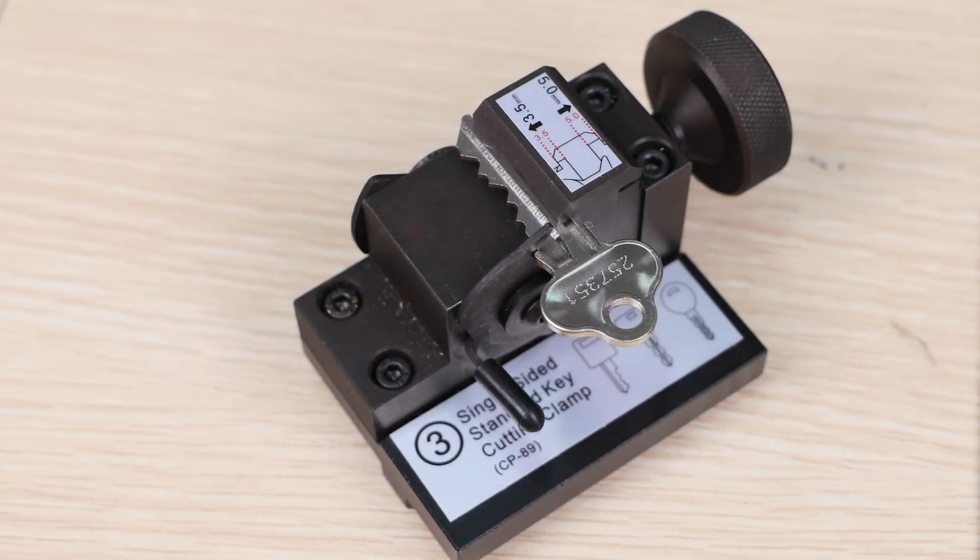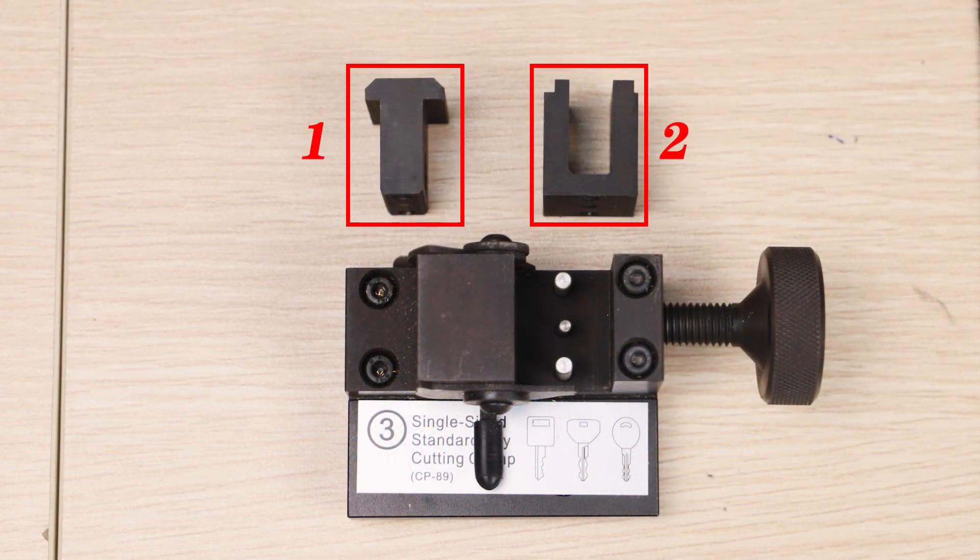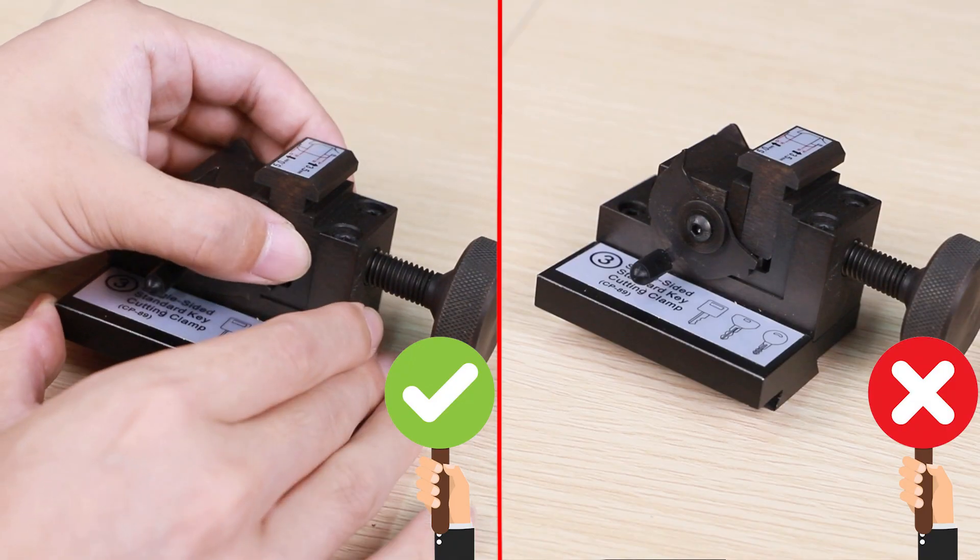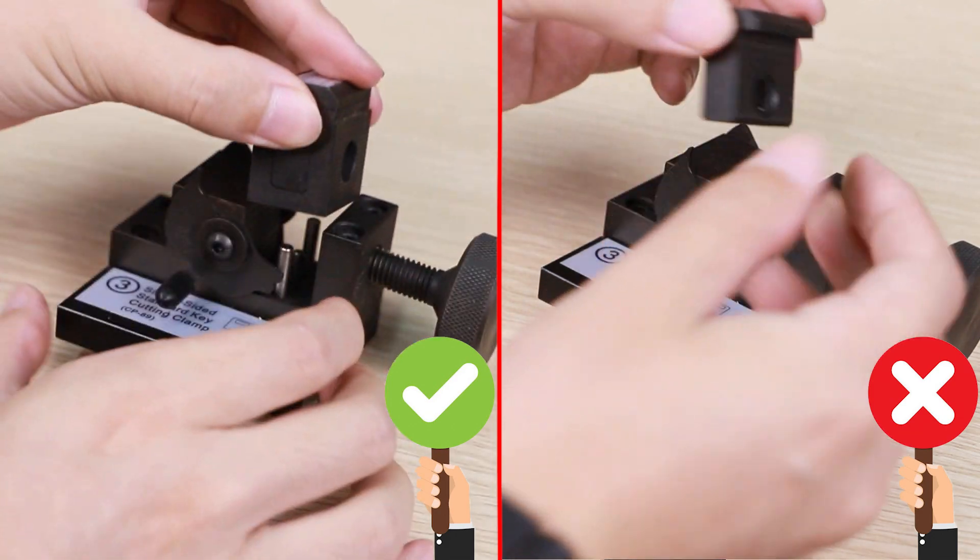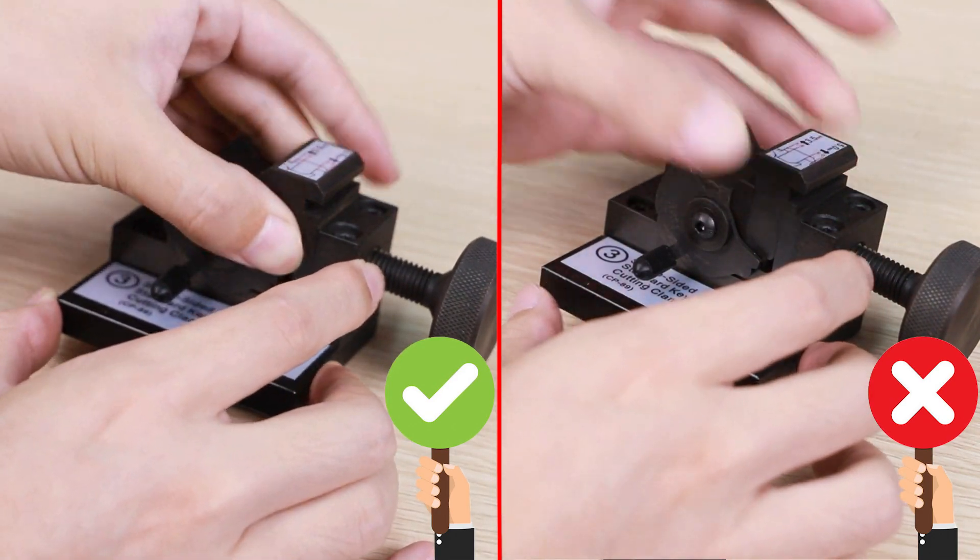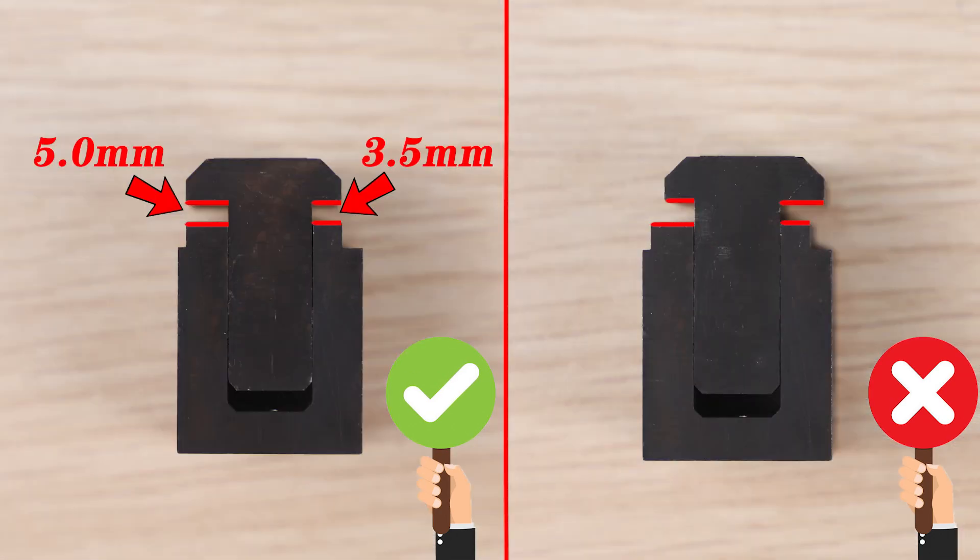It needs to be cut with single standard key jaw. Please pay attention to two points when using this jaw. Point one: block one and block two are a whole. Please take out both blocks to change side if machine asks you to change side, but not just block one shown in the figure. Point two: please make sure the length of both blocks match each other after changing side shown in the figure.